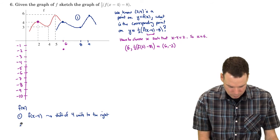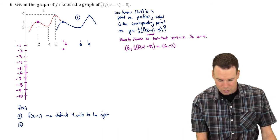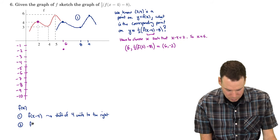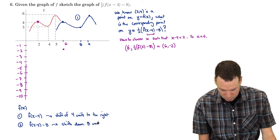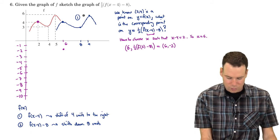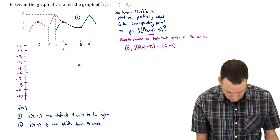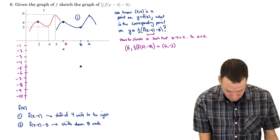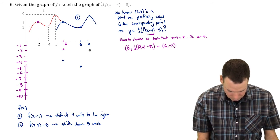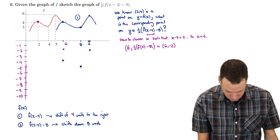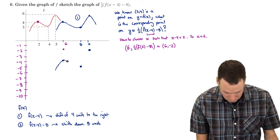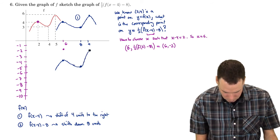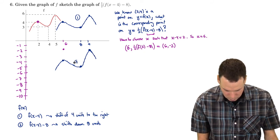Next, we subtract 8 from the result — that's f(x − 4) minus 8 — which shifts the graph down 8 units. All points from step 1 shift down by 8: the point with y-coordinate 3 becomes negative 5, y = 4 becomes negative 4, and y = 6 becomes negative 2. We connect them all up to get the graph after step 2.